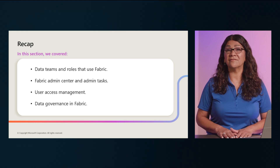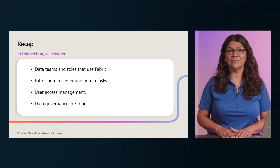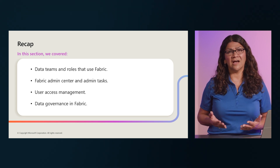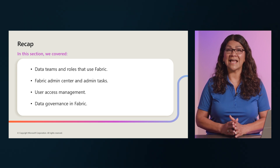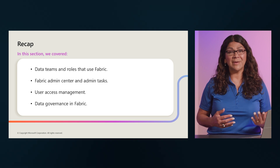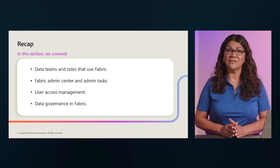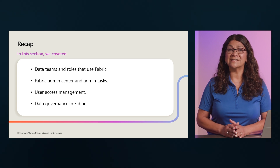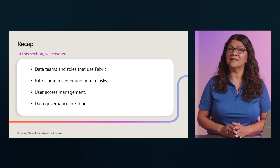In this section, we talked about Microsoft Fabric architecture and critical concepts like tenant, capacity, domain, workspace, and items. We also discussed typical Fabric admin tasks and tools including the Fabric admin portal, monitoring workspaces, and the capacity metrics app. We then looked at the layers of Microsoft Fabric security, how to assign and manage user licenses, and how to govern data in Fabric. For more information, please see the link shown here. Thank you for tuning in to the DP-700 course, and we encourage you to continue your learning journey on Microsoft Learn at aka.ms/learn.